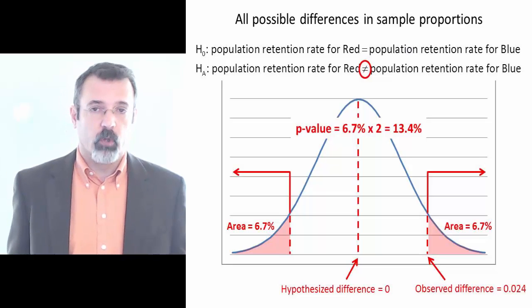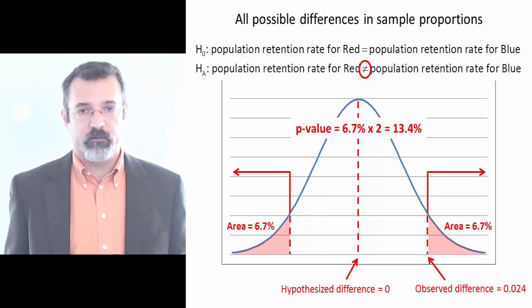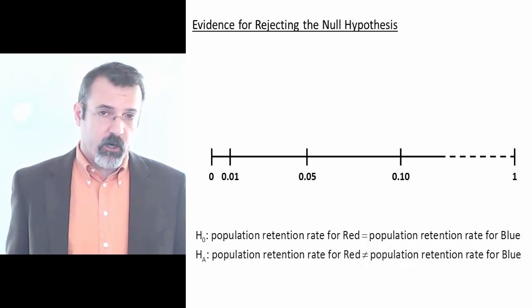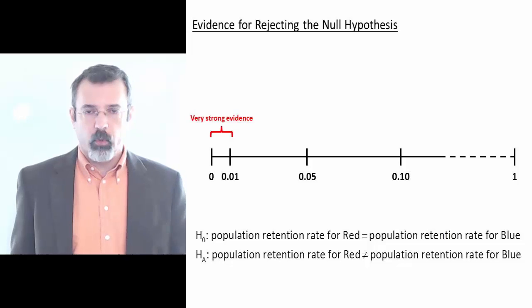So the p-value for our hypothesis test is the 6.7% area multiplied by 2, or 13.4%. So do we have evidence to reject the null hypothesis? If our p-value is between 0 and 0.01,